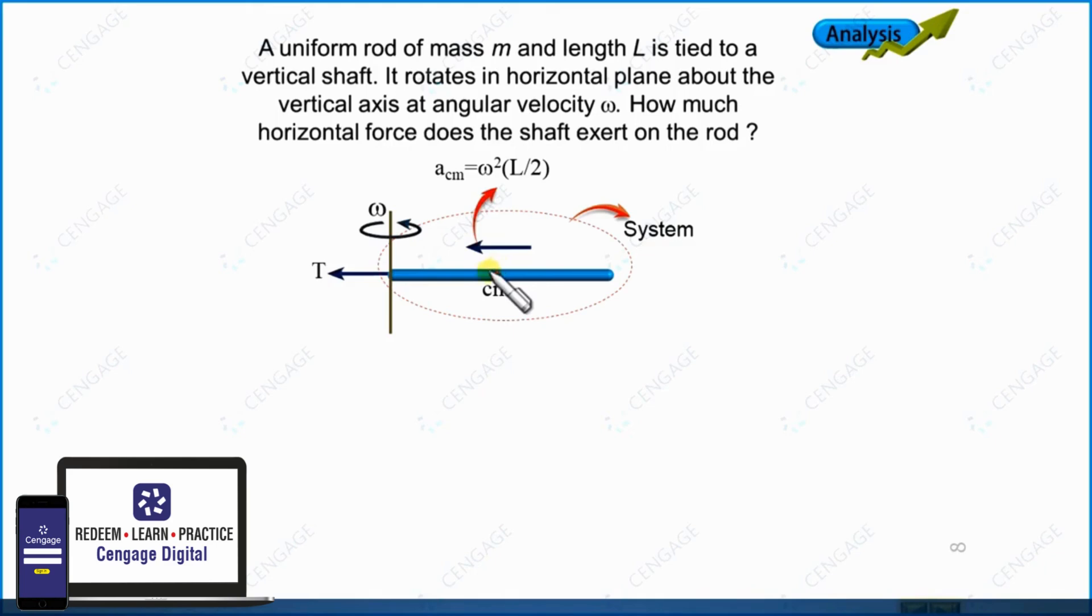We can apply Newton's second law, or you can say the equation of circular motion for the center of mass. We write F external equals mass multiplied by a CM. F external is nothing but capital T in the leftward direction.